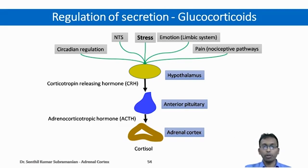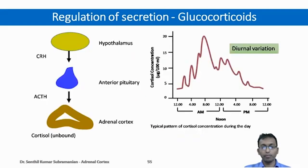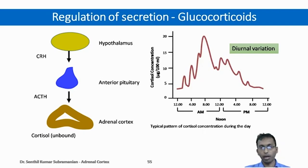Another important point: the secretion of CRH and thereby ACTH is under circadian regulation. The cortisol secretion increases at morning hours around 8 AM and then gradually decreases throughout the day. This diurnal variation is due to the hypothalamic circadian cycle.